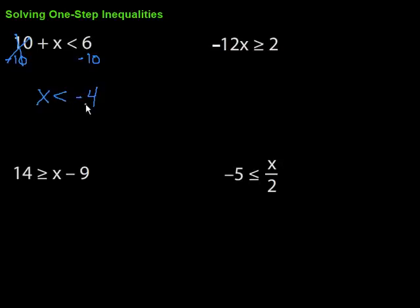What's something less than negative 4? Negative 5 would be less than negative 4. Plug it in. We'd have 10 plus negative 5, which is 10 minus 5, which would be 5, which is less than 6. So that works. You can do that checking as well.